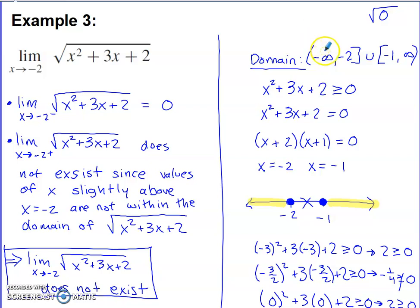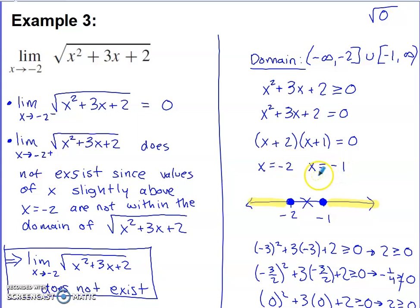So I'll carefully identify the domain of this function. I need what's under the root — x² + 3x + 2 — to be 0 or larger. To solve this inequality, I change it to an equation and solve the quadratic by factoring. The two solutions are negative 2 and negative 1. Looking back at the inequality symbol (which includes 'equal to'), I place closed circles at those two solutions on the number line. That gives me three sections: left of negative 2, between negative 2 and negative 1, and right of negative 1.